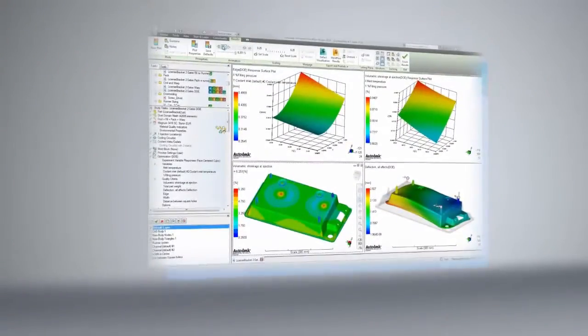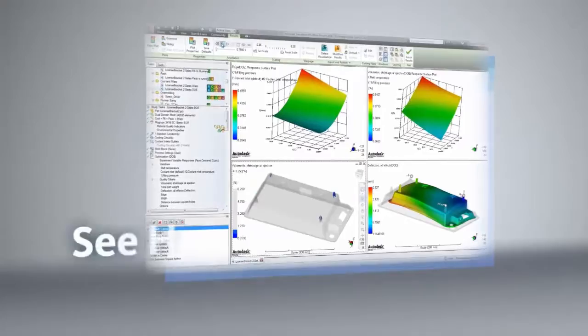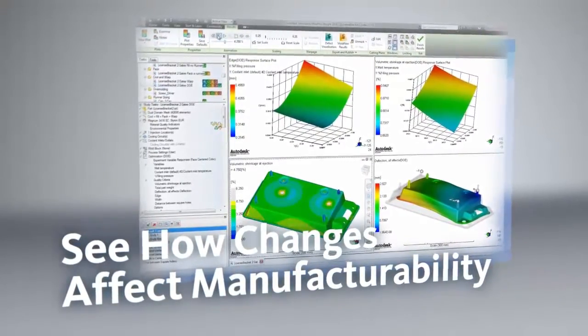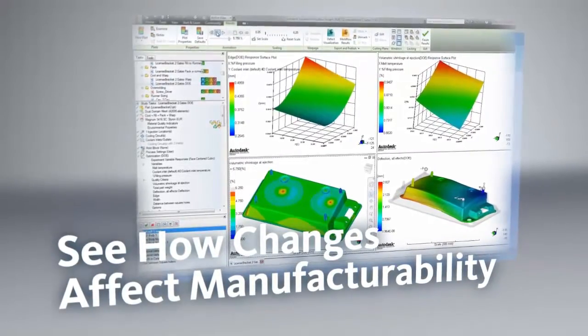Through simulation setup and results interpretation, users can see how changes to materials, geometry, wall thickness, and gate location can affect the manufacturability of plastic materials.